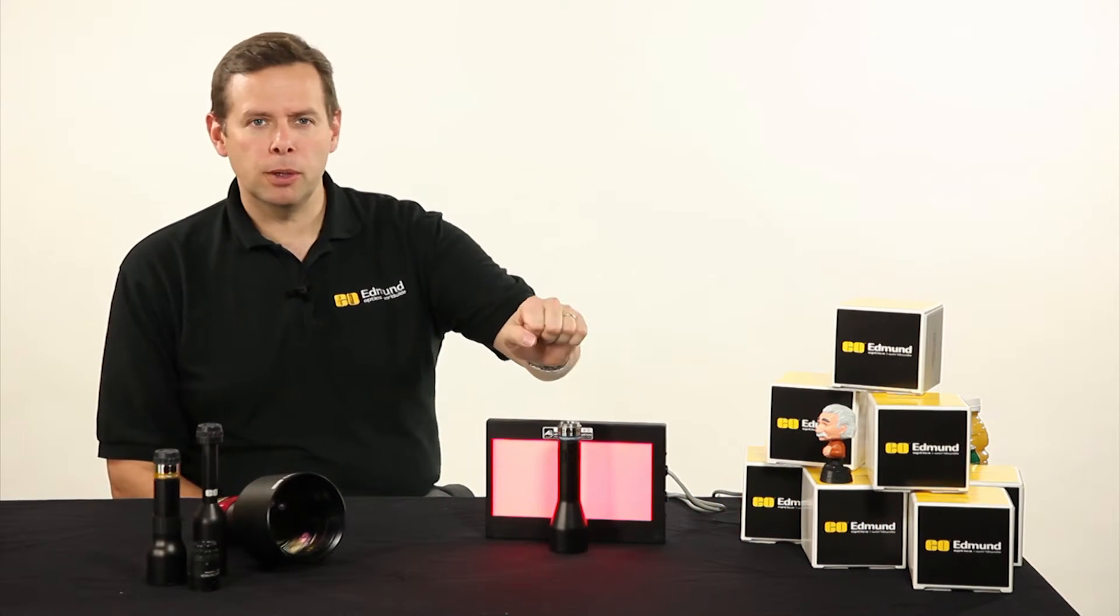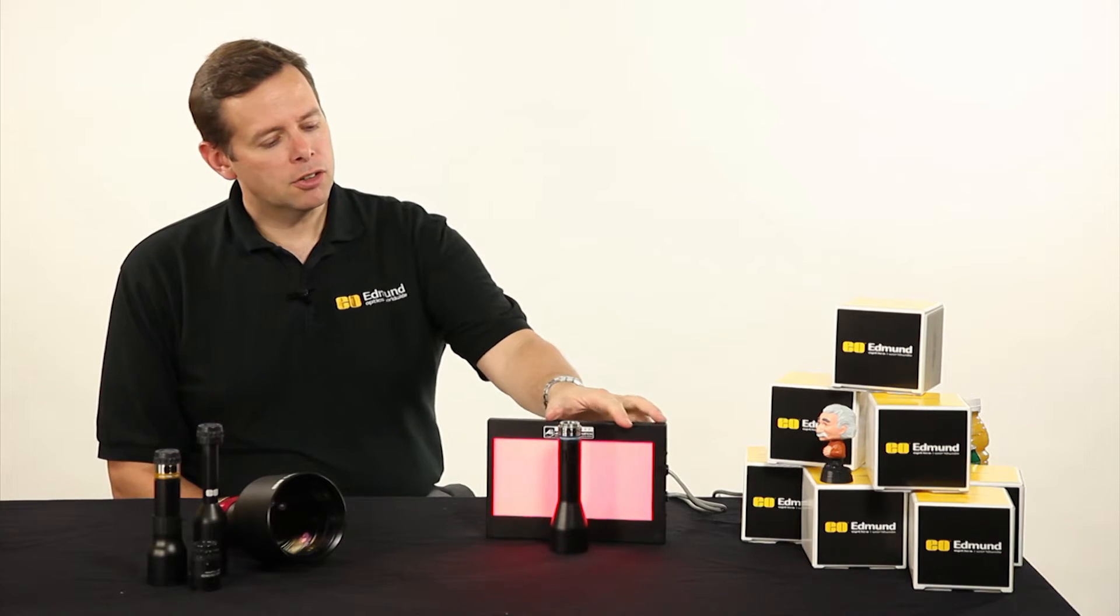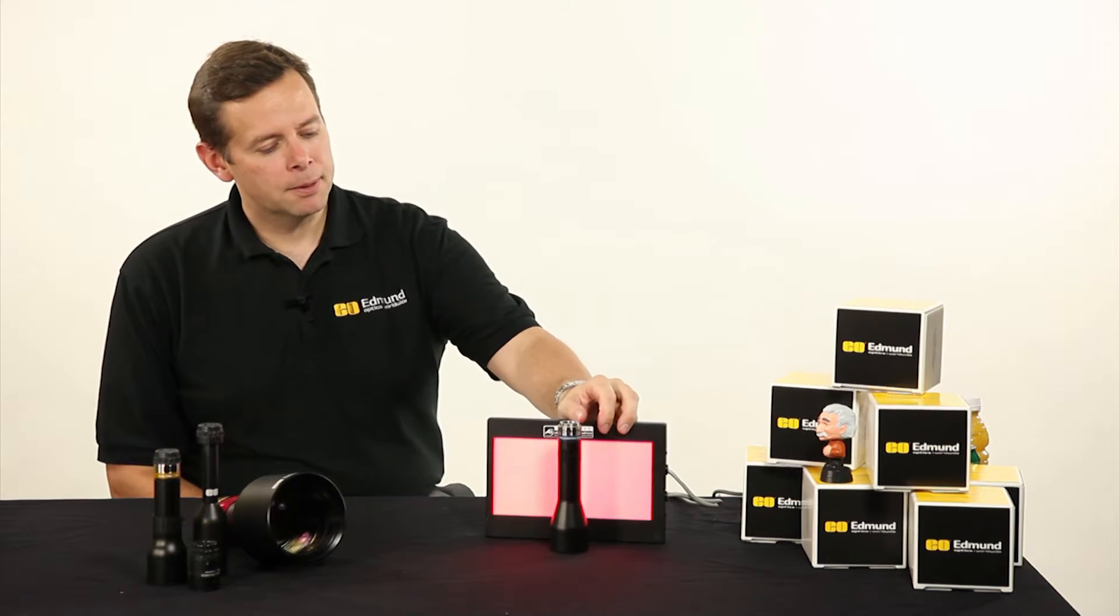We're going to look at specifically diffuse types of backlights like I have here. As you can see this is a very large area backlight. It's about 4 by 8.